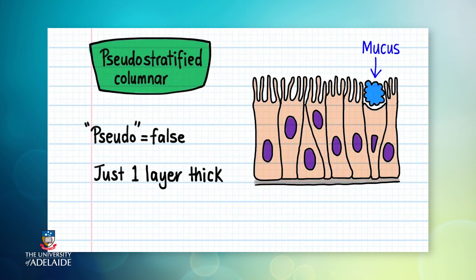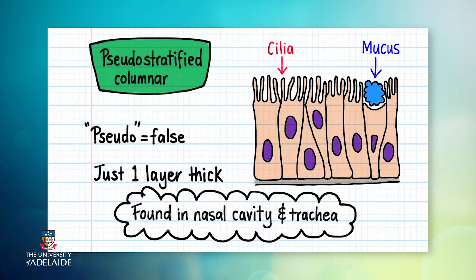Pseudostratified columnar epithelium secretes a sticky mucus and has cilia on its surface. It's found in the nasal cavity where mucus traps dust in the air, preventing it from getting into your lungs, and cilia moves the dust and mucus towards your throat where it's swallowed.